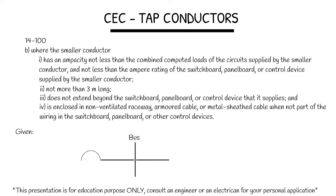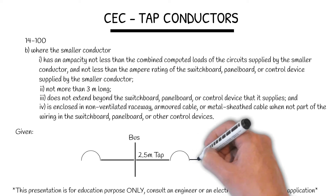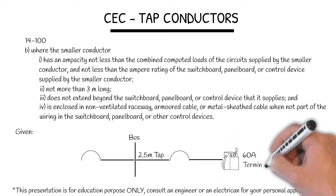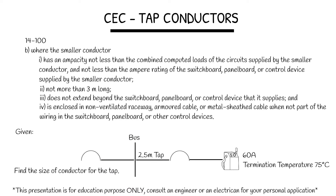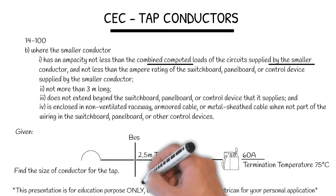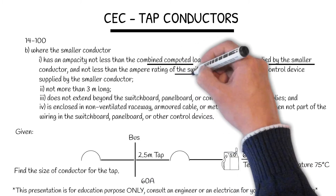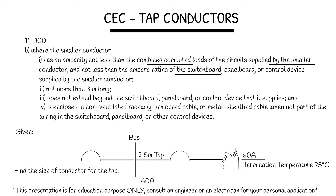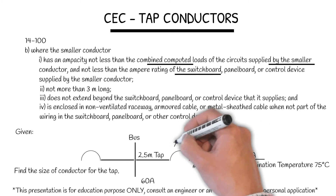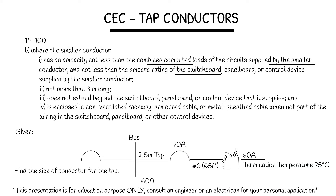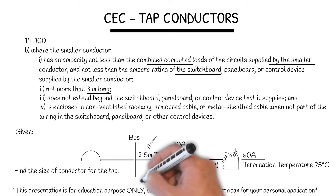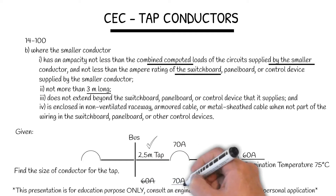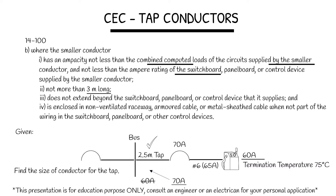This is our bus. We have a 2.5 meter tap. This is our load. We draw 60 amps with a termination temperature of 75 degrees Celsius. Find the size of conductor for the tap. Not less than the combined connected load supplied by the smaller conductor — that's 60 amps. It has the ampere rating of the switchboard. To find that, we must size the wire first, which is number 6 for 65 amps, and size the overcurrent device at 70 amps. Therefore the switchboard is 70 amps. It's not more than 3 meters long, which we are okay. Therefore the larger of the two values is 70 amps, so our wire size for the tap would be number 4, good for 85 amps.